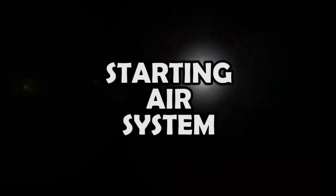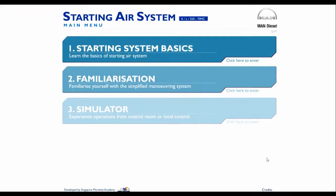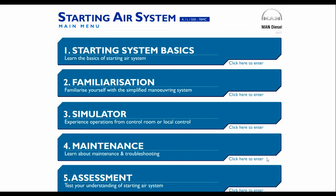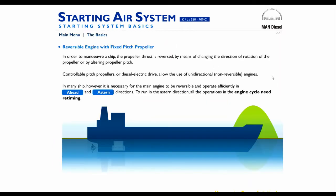Starting air system basics: a reversible engine with a fixed pitch propeller. In order to maneuver a ship, the propeller thrust is reversed by means of changing the direction of rotation of the propeller or by altering the propeller pitch. Controllable pitch propellers or diesel-electric drive allow the use of uni-directional, unreversible engines.